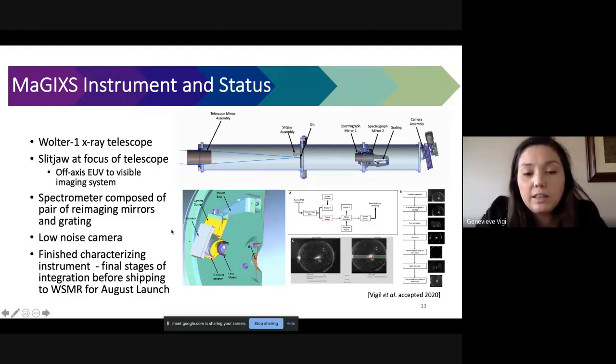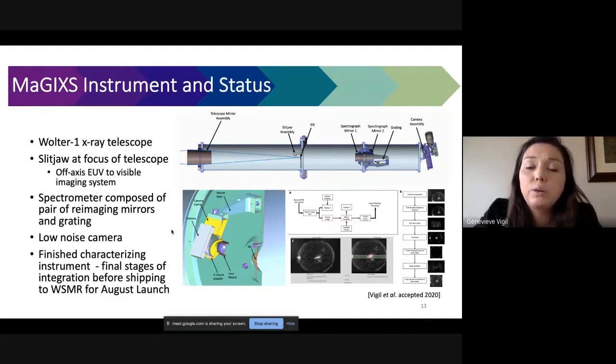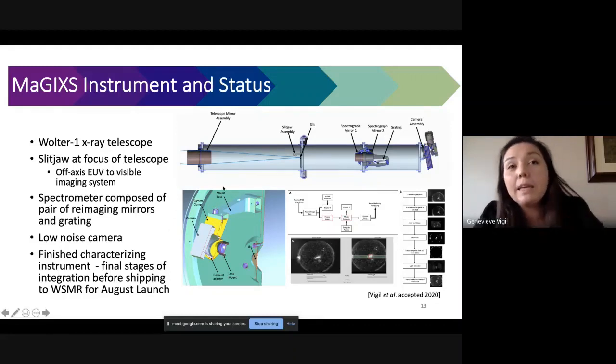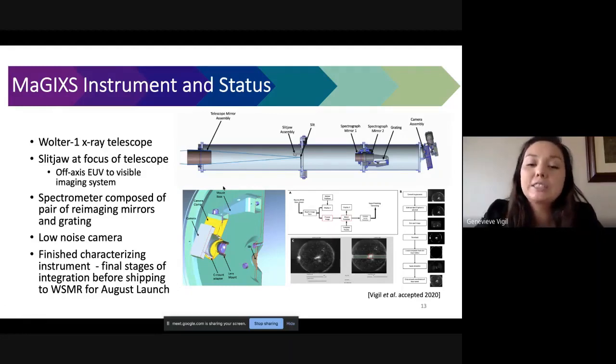So right before the pandemic hit we were just finishing up a lot of our characterization of MaGIXS. We were at the X-ray cryogenic facility at Marshall which is the same facility that a lot of James Webb testing and Chandra testing was performed at, so we were able to do a lot of our throughput characterizations and spectral calibration. Then the pandemic hit and we weren't able to go into the lab anymore so our launch slipped, but now we're just starting to get back to the lab and we have just the finishing touches of integration and testing. We're still hoping to launch in August of this year.